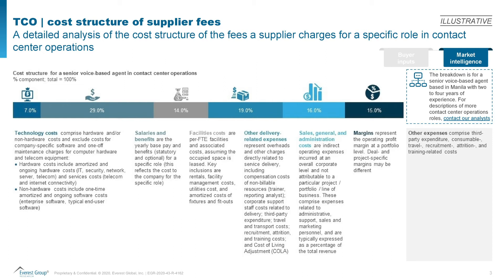They're not specific to one provider, but we base it on one very common role. In this case, the example is a senior voice-based agent based in Manila. We look at what is the typical breakdown across technology, salaries and benefits, facilities costs, margin, and G&A expenses. Every provider has a breakdown of these costs within their pricing, and we want to help give an idea of what makes up that supplier fee. It's a really common breakout within a TCO model, and we have a pricing assurance practice that has a lot of data to support this.